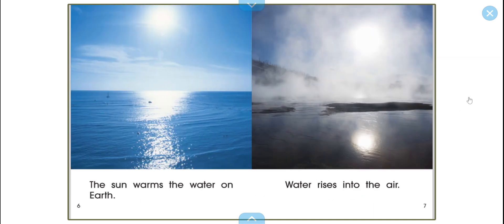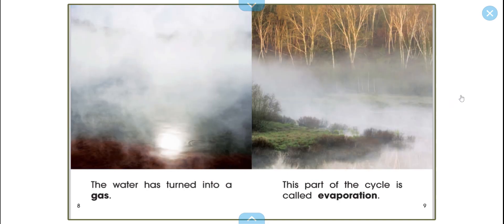The sun warms the water on Earth. Water rises into the air. The water has turned into a gas. This part of the cycle is called evaporation.